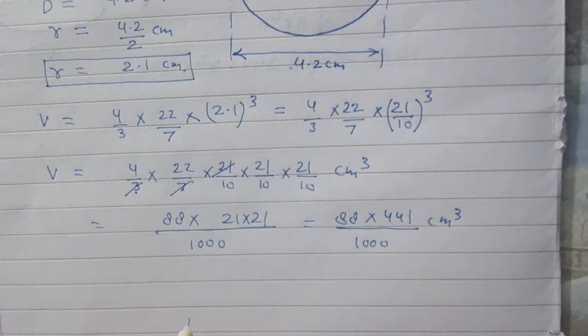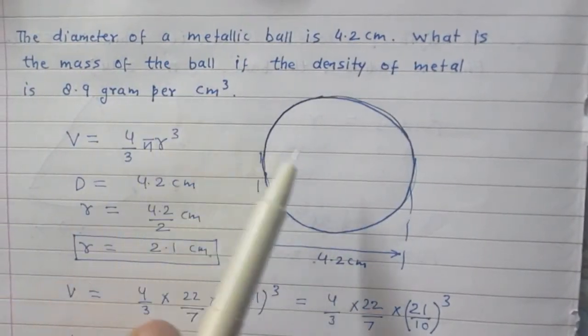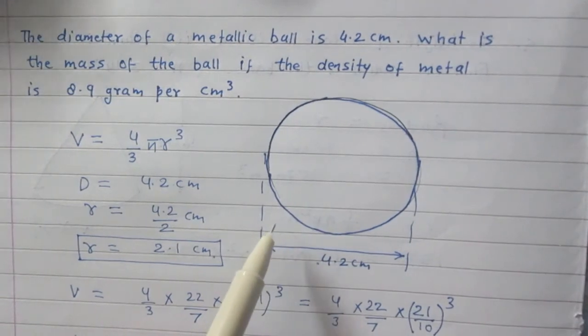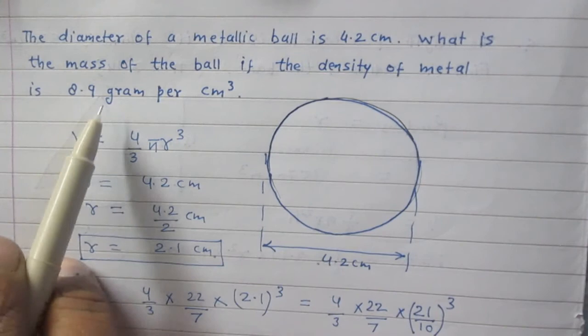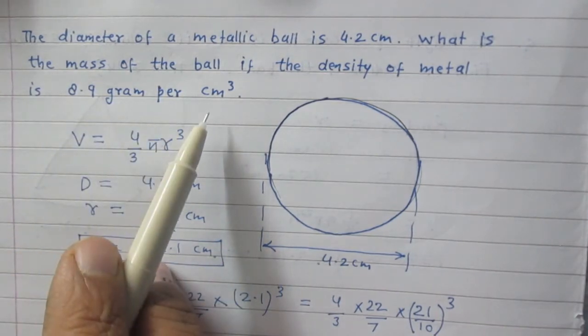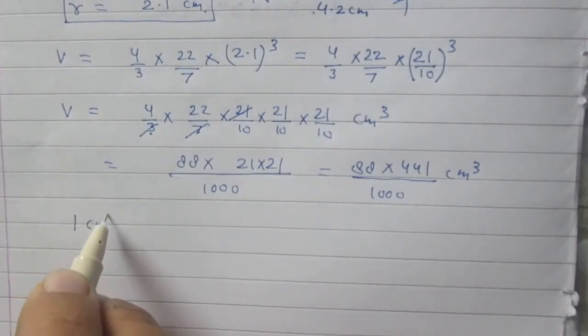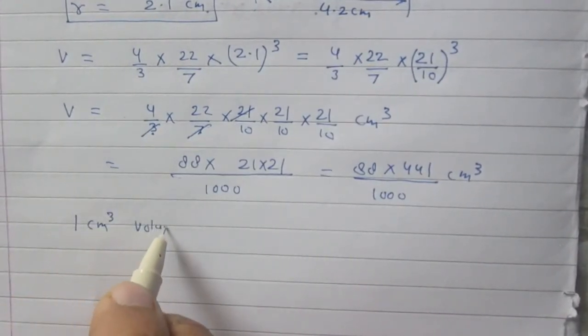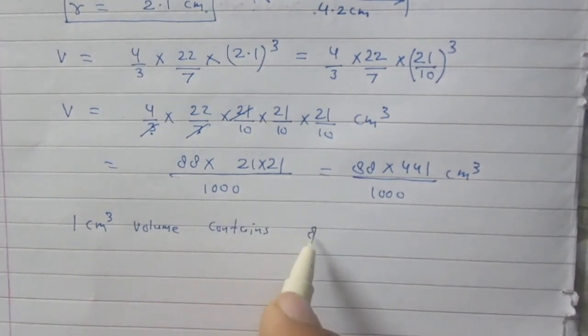Now we are to find the mass of this metallic ball. We are given that density of this metal is 8.9 gram per centimeter cube. What does it mean? It means that 1 centimeter cube of volume contains 8.9 gram of mass.